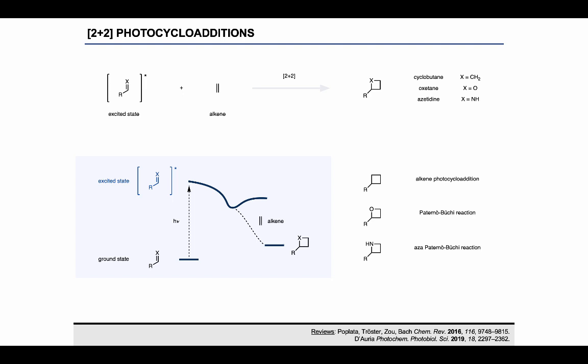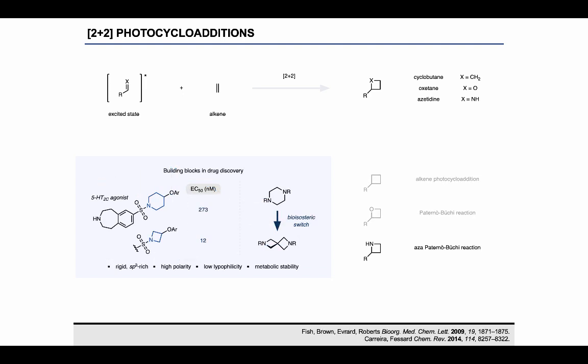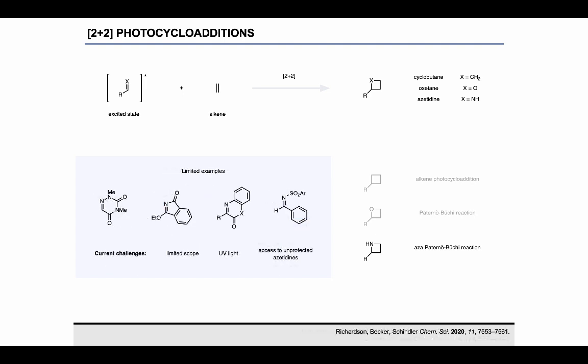This was really surprising to us, as azetidines have really found increased use as building blocks in discovery chemistry in recent years. They often display highly desirable characteristics and can be used as a bioisoster for the corresponding larger nitrogen heterocycles, which further motivated us to pursue research in this area. Yet the synthesis of these scaffolds using photocycloaddition reactions remained highly underdeveloped. In fact, there really only exists a very small number of imines that is known to participate in [2+2] cycloaddition reactions, and in most cases these really only react with this very specific type of alkene.